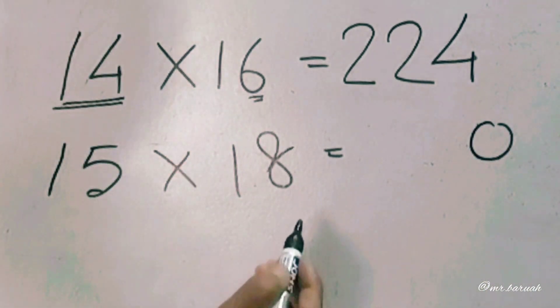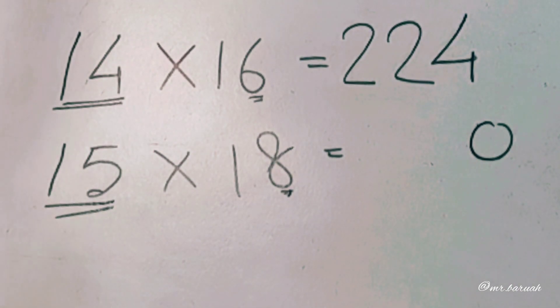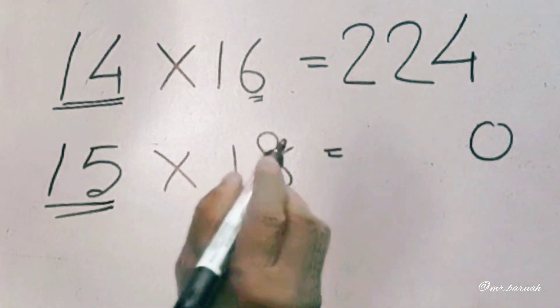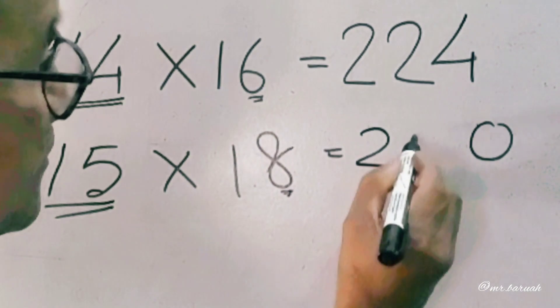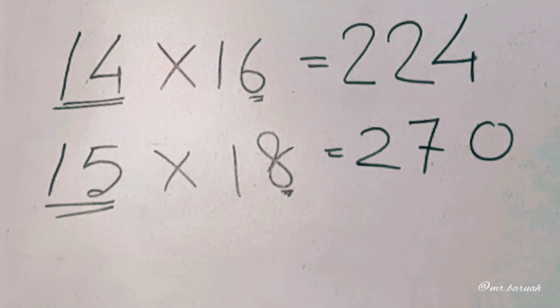8 into 1, 23 plus 4 equals 27. 15 into 18 equals 270.